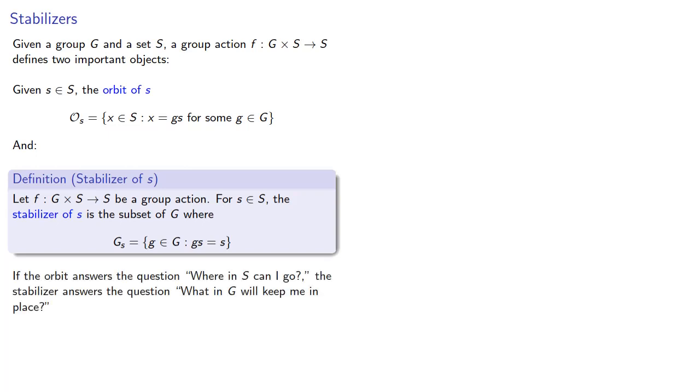If the orbit answers the question, where in our set S can I go, the stabilizer answers the question, what in our group G will keep me in place?